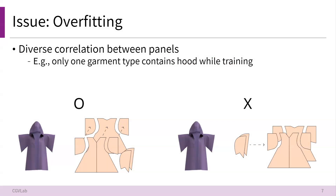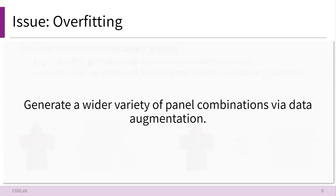Based on this insight, we introduce a transformer-based deep neural network called PanelFormer to learn the parametric space of sewing patterns from input garment images. Furthermore, we identified a potential overfitting problem during training, stemming from the strong correlation among panels in sewing patterns. For example, suppose the training dataset only includes one type of garment with a hood — the model might consistently produce the corresponding sewing pattern whenever it encounters the hood, failing to generalize to other garment types. To address this issue, we generate a wide variety of panel combinations via data augmentation, elaborated later in the presentation.